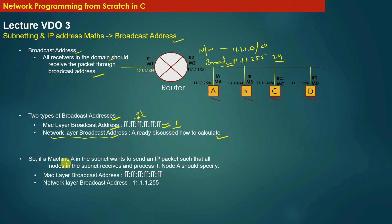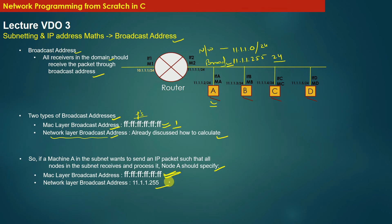Now suppose that machine A wants to send an IP packet such that all nodes in the same subnet receive and process it. In order to do so, node A should specify the destination MAC address as the broadcast address, which is simply all bits as ones, and the network layer broadcast address will be 11.1.1.255. If machine A generates a packet with these destination addresses, all the machines in the same subnet will process the packet.